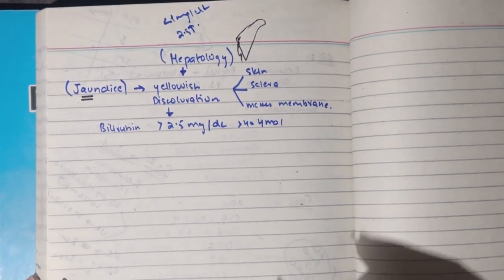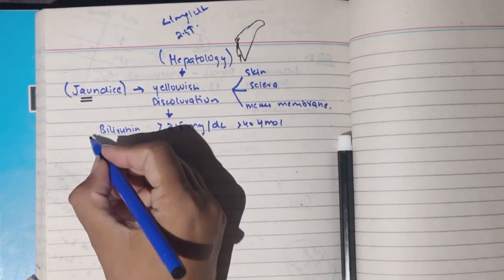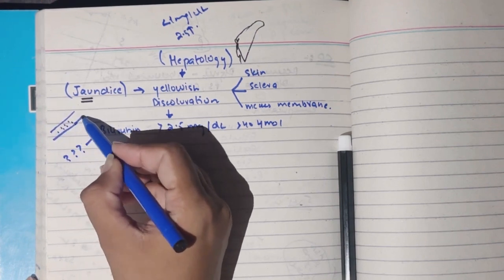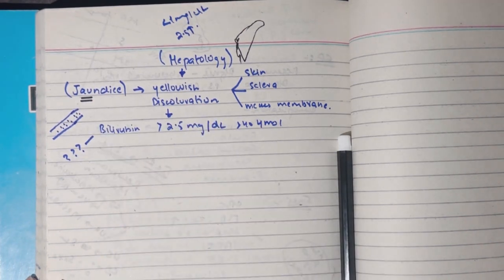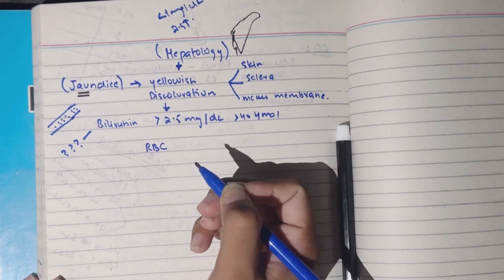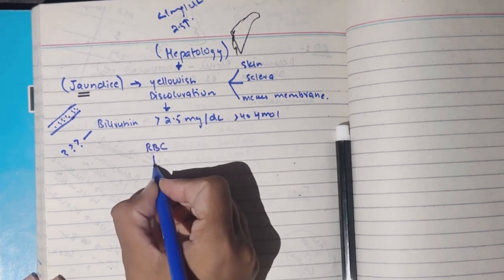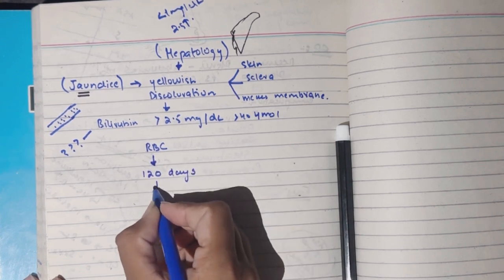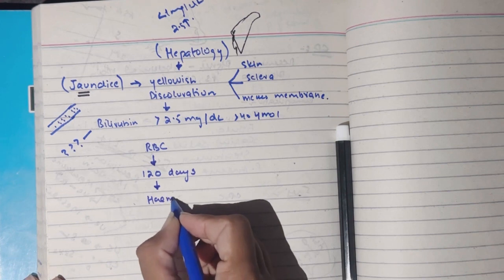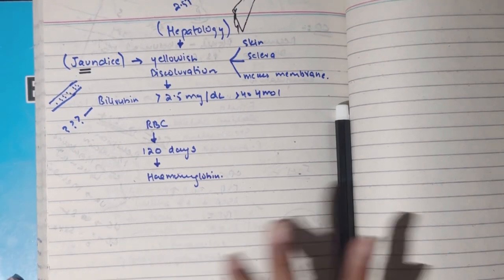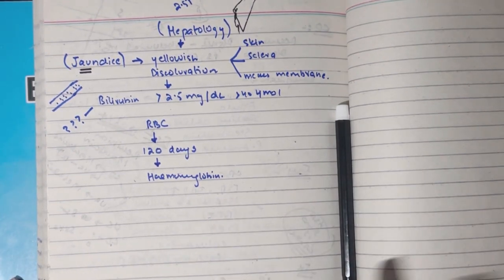The question is: why is bilirubin elevated? To understand this, we start with red blood cells. Red blood cells have a 120-day life cycle. After 120 days, RBCs undergo haemolysis — they are broken down. About 95% of the RBC cytoplasm is haemoglobin. So when an RBC is broken, it releases haemoglobin, and that haemoglobin is then further broken down.